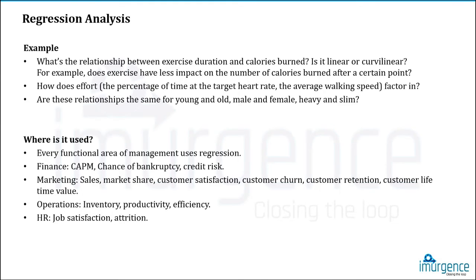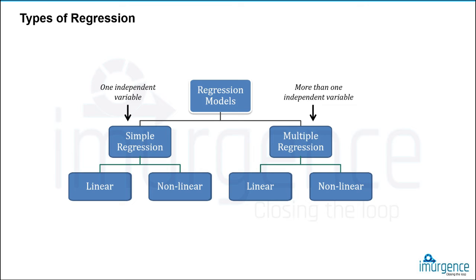There are two types: simple regression with one independent variable, and multiple regression with more than one independent variable. Within simple regression you can have a linear as well as a non-linear form, and similarly in multiple regression. In the linear form we use the regression model day in and day out — typically lm in R. In the non-linear part you have exponential models, logistic regression models, probit models, and various others.